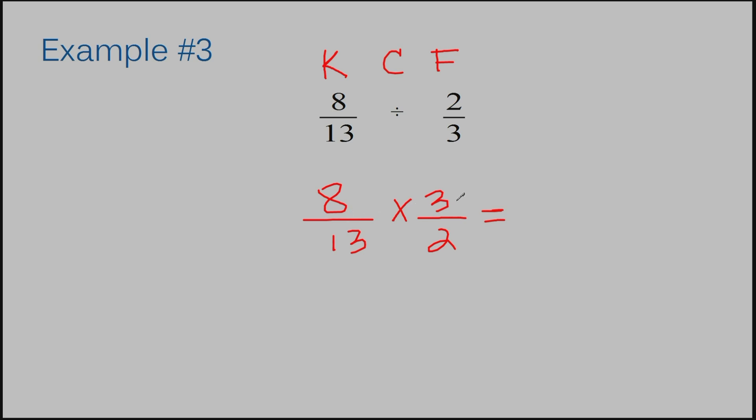8 times 3 is 24. 13 times 2 is 26. I can divide 2 into both my 24 and 26 to simplify, and that would give me 12 over 13. So my answer to example number 3 is 12 over 13.